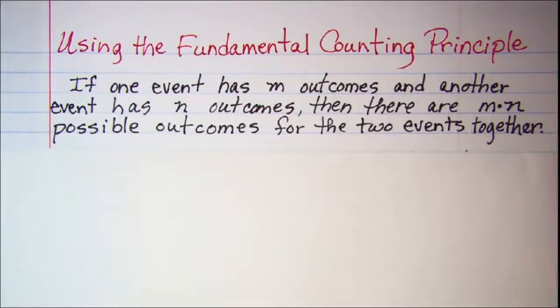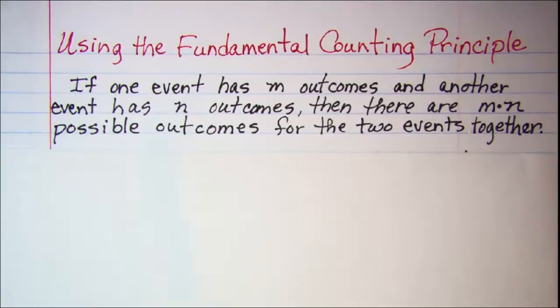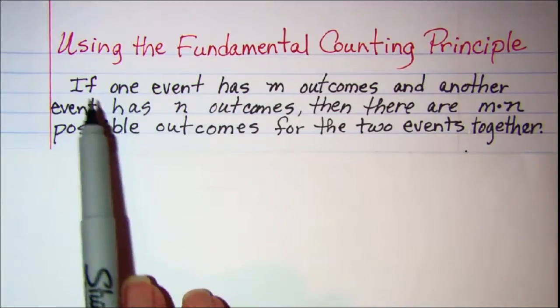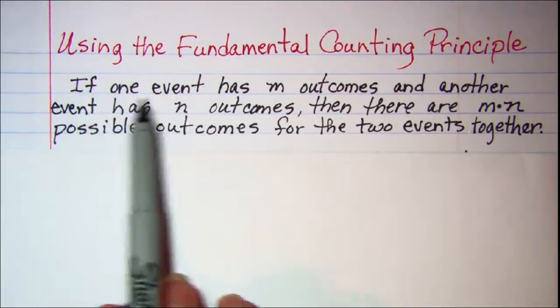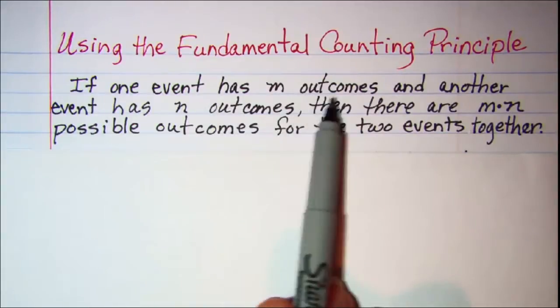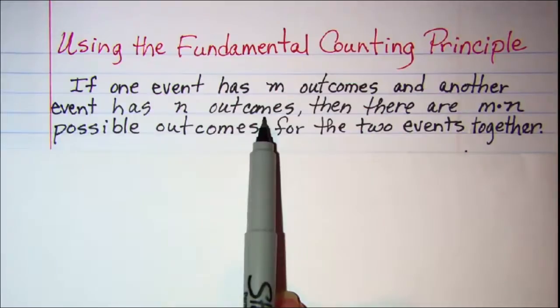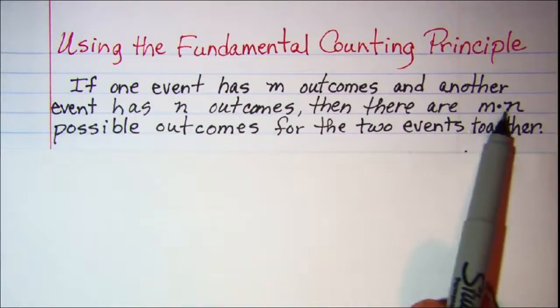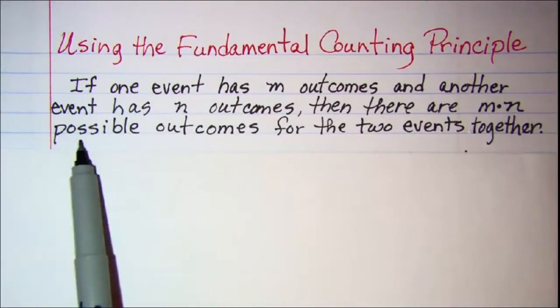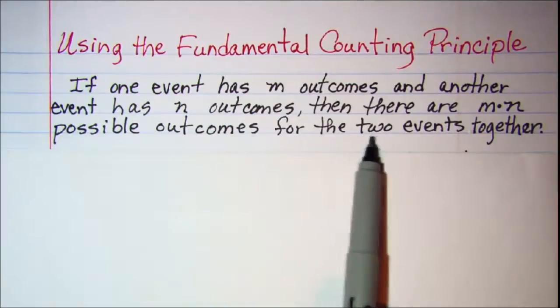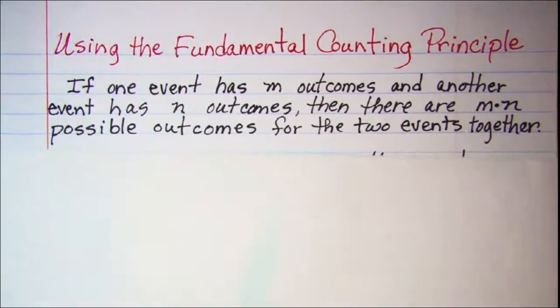In this video we'll be using the fundamental counting principle to solve problems. The fundamental counting principle says if one event has m outcomes and another event has n outcomes, then there are m times n possible outcomes for the two events together.